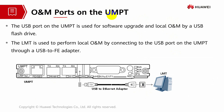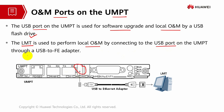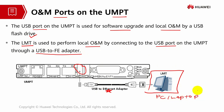The OM ports on the UMPT are used to upgrade software and for software commissioning. Local OMM is also supported by a USB flash drive, meaning local commissioning can be done using a USB flash drive. The LMT, or Local Maintenance Terminal, is used to perform local OMM by connecting the USB port. The USB port on the UMPT connects through a USB-to-FE adapter — a USB-to-Ethernet adapter — towards a PC or laptop for local commissioning.